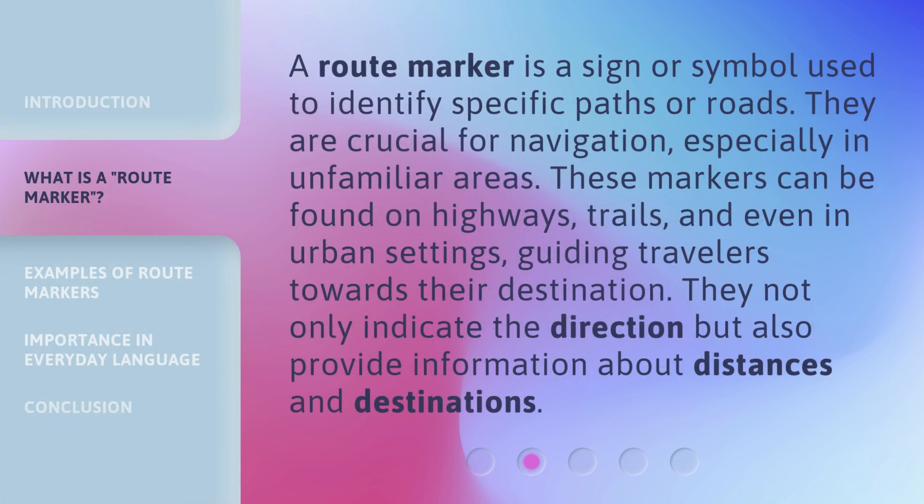A route marker is a sign or symbol used to identify specific paths or roads. They are crucial for navigation, especially in unfamiliar areas. These markers can be found on highways, trails, and even in urban settings, guiding travelers towards their destination. They not only indicate the direction but also provide information about distances and destinations.